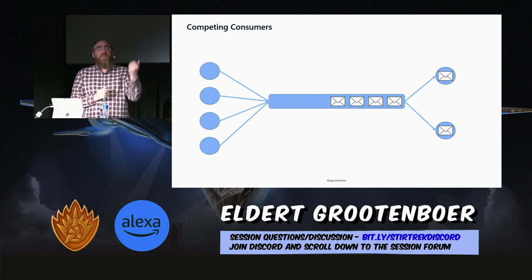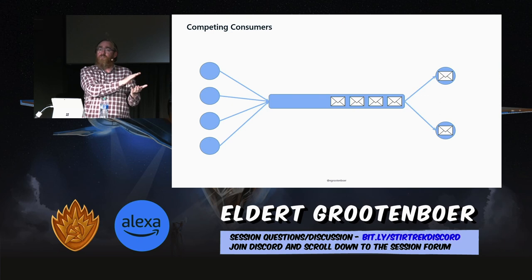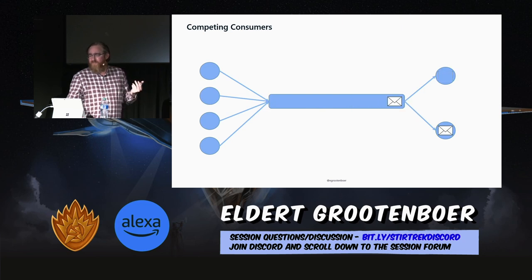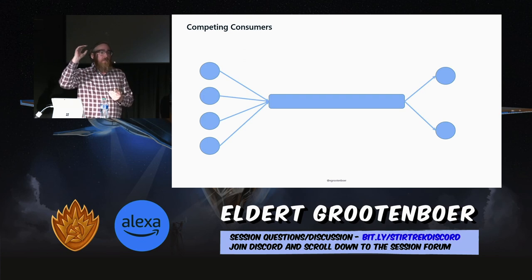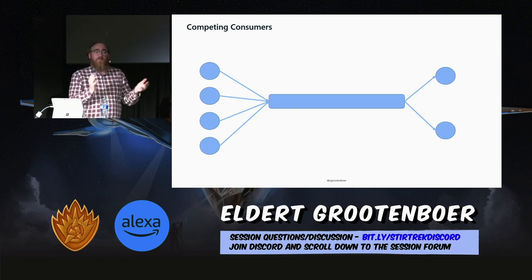As these messages go along, each consumer will just keep picking up messages and consuming until the queue is empty. Messages are in order — we do preserve order. Messages will be consumed in the order they came in, unless of course you start doing things like abandoning messages.